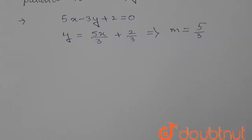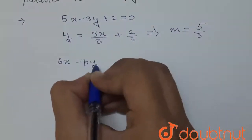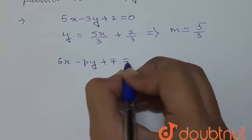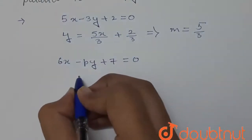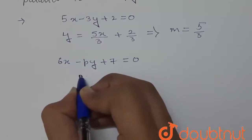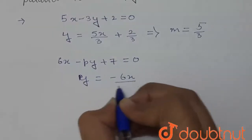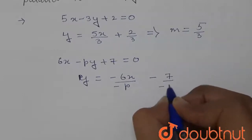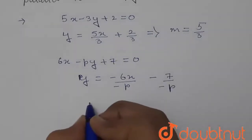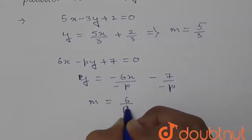Next, we are given 6x - py + 7 = 0. From here, we can say that y = (6/p)x + (7/p). So from here, we can say that m₂ = 6/p.